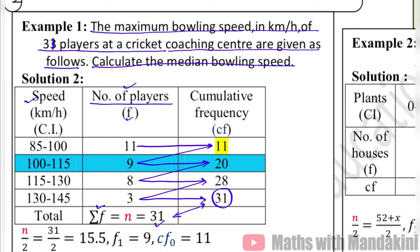Now we calculate n by 2: 31 divided by 2 equals 15.5. We look in the cumulative frequency column to find where 15.5 falls. From 11, we cannot get 15.5. From 20, we can. So the class interval corresponding to cumulative frequency 20 is our median class. This means the median will lie in this class interval.